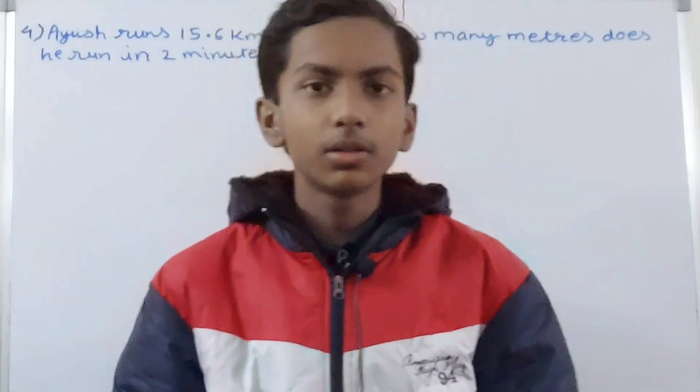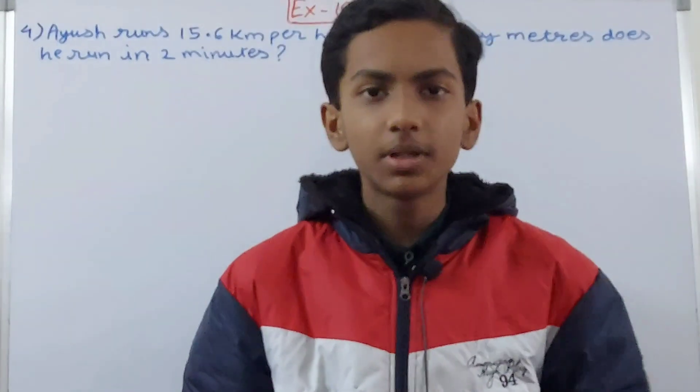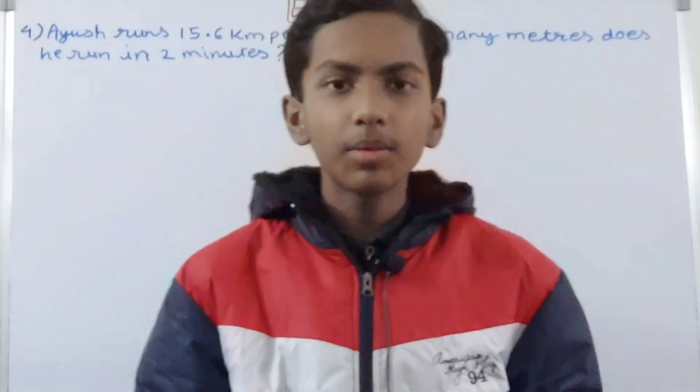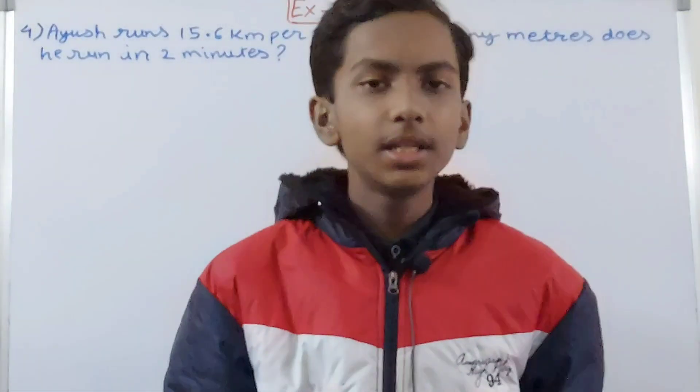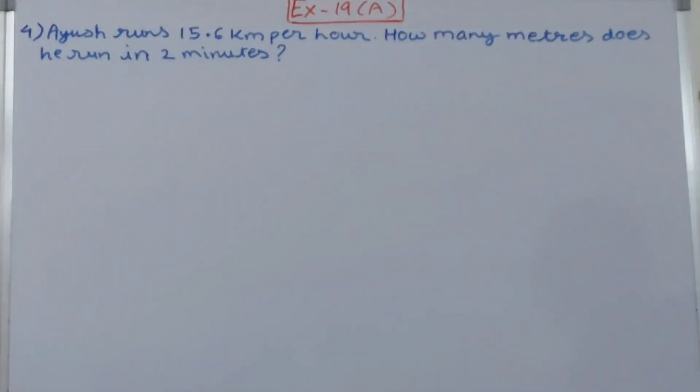Welcome back to my YouTube channel Unlocky Learning. In this video we are going to solve ICSE mathematics class 7, chapter 19, speed time and distance, exercise 19A, question number 4. This one is: Ayush runs 15.6 kilometers per hour, how many meters does he run in two minutes?